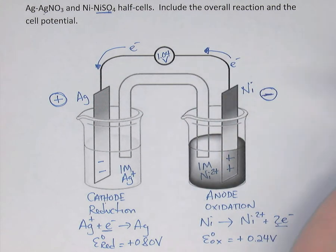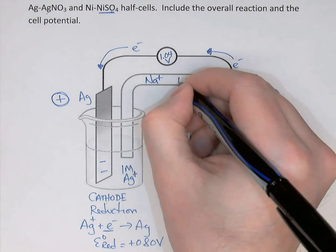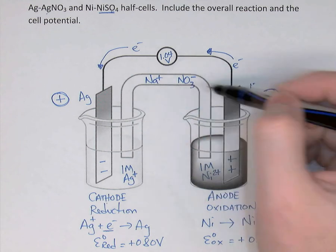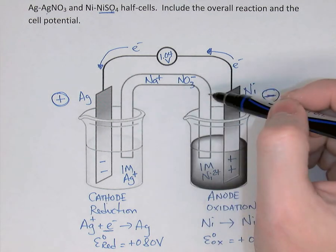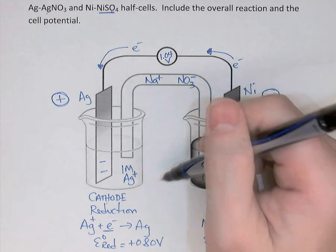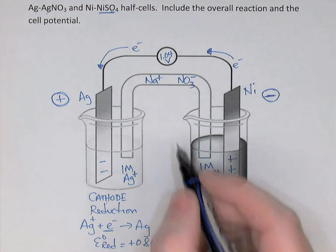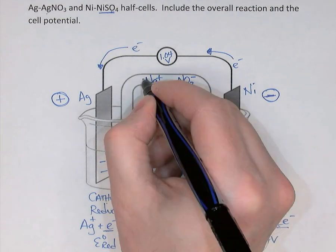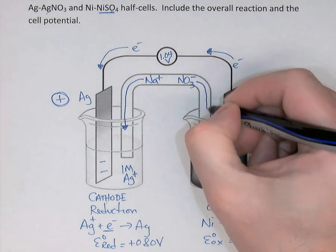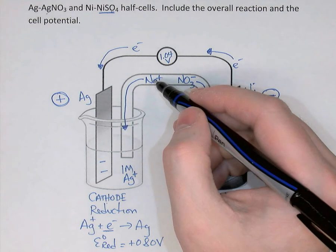For the salt bridge this time, let's use sodium nitrate instead of potassium nitrate — NO₃⁻ and Na⁺. There are a couple of requirements for a salt bridge salt: it has to be soluble, and its ions should not chemically react with anything in your cell. Sodium nitrate and potassium nitrate are good choices for most cells. The cations — in this case sodium ions — will flow out of the salt bridge toward the cathode, while the anions — nitrate ions — will flow toward the anode. Anions go to the anode; cations go to the cathode.